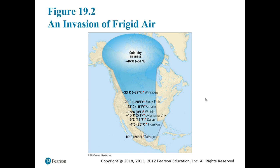An air mass is going to get its characteristics based on where it forms — that's an important idea. So an air mass that forms over continental Canada is going to be cold, but it's also going to be dry. We know that because it's forming over land instead of over water. Any air mass forming over land is going to be considered dry, and because this one is located in Canada, it's cold as well.